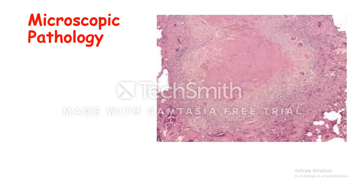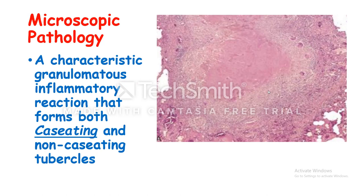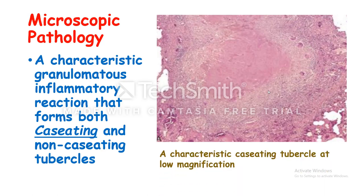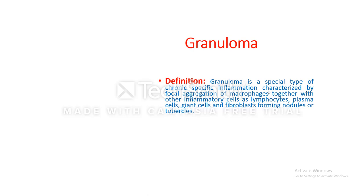What is the microscopic pathology? The microscopic pathology is the characteristic granulomatous inflammatory reaction, which forms either caseating or non-caseating tubercles. In the majority of cases it is caseating granuloma. What is the definition of granuloma? Granuloma is a special type of chronic specific inflammation. We classify chronic inflammation into chronic specific and chronic non-specific. Granuloma is characterized by focal aggregation of macrophages together with other inflammatory cells — lymphocytes, plasma cells, giant cells, and fibroblasts — forming nodules or tubercles. Individual tubercles are microscopic; only when they fuse together do they become macroscopically visible.